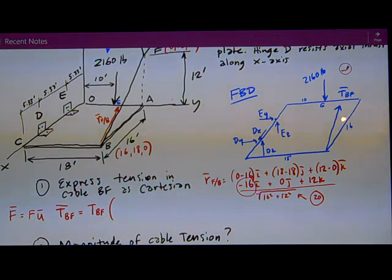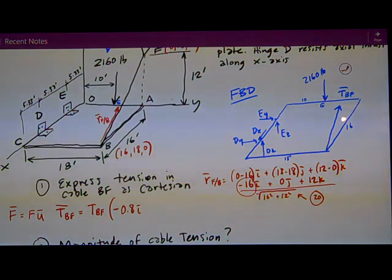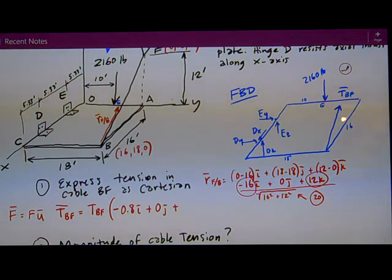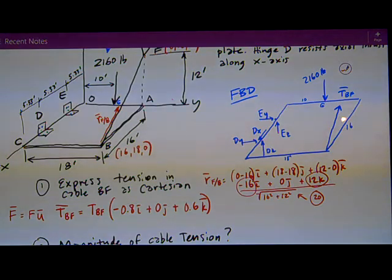It's TBF, the magnitude, which we don't know but we're going to solve for, times the unit vector negative 16 over 20, simplifies out as negative 0.8I, zero J, and 12 over 20 is 0.6K. And that's my answer.